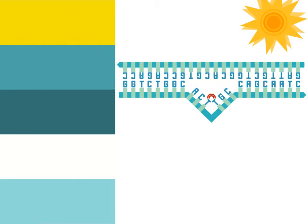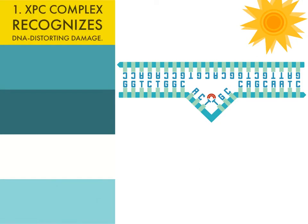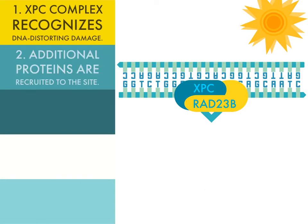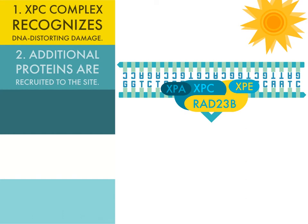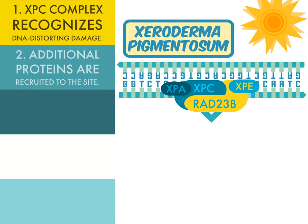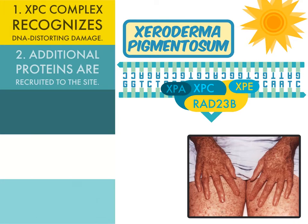DNA-distorting damage is recognized by a protein dimer called XPC-RAD23B, where XPC stands for xeroderma pigmentosum complementation group. The presence of XPC-RAD23B results in additional proteins being recruited to the site of damage, serving functions like confirming the site is truly damaged. Xeroderma pigmentosum is an autosomal recessive condition causing significant predisposition to skin cancers, resulting from a genetic mutation in one of seven XP proteins involved in nucleotide excision repair — named XPA through XPG. Even the absence of one of these proteins is sufficient to cause a dangerous defect in the repair of ultraviolet light damage to DNA.